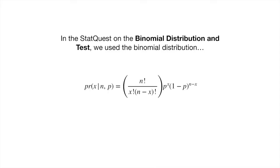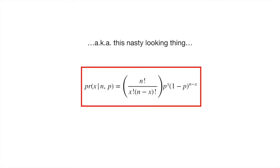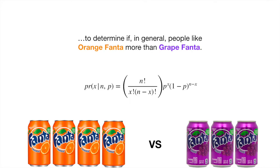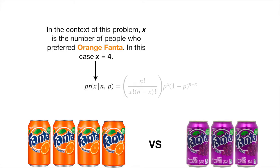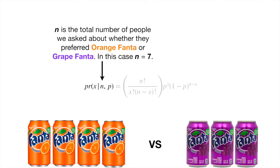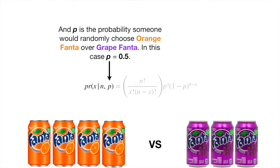In the StatQuest on the binomial distribution and test, we use the binomial distribution — a.k.a. this nasty looking thing — to determine if, in general, people like Orange Fanta more than Grape Fanta. In this context, x is the number of people who preferred Orange Fanta (x equals 4), n is the total number of people we asked (n equals 7), and p is the probability somebody would randomly choose Orange Fanta over Grape Fanta (p equals 0.5).